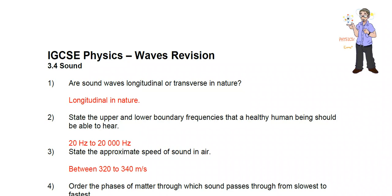State the upper and lower boundary frequencies that a healthy human should be able to hear. Well, the lowest frequency you can hear is around 20 Hertz and the highest frequency you can hear is approximately 20,000 Hertz.